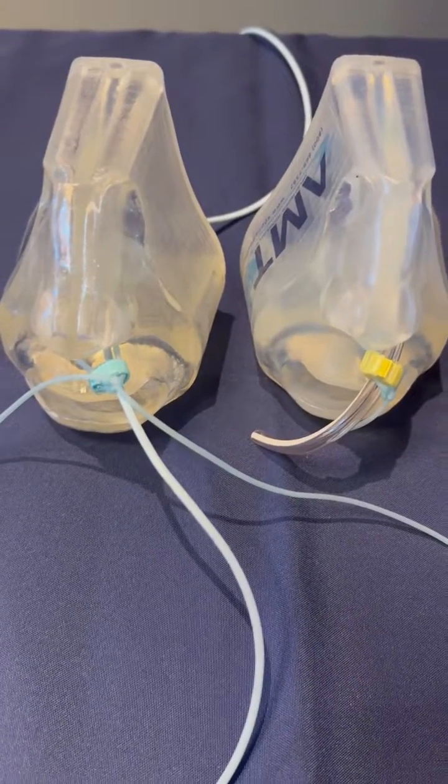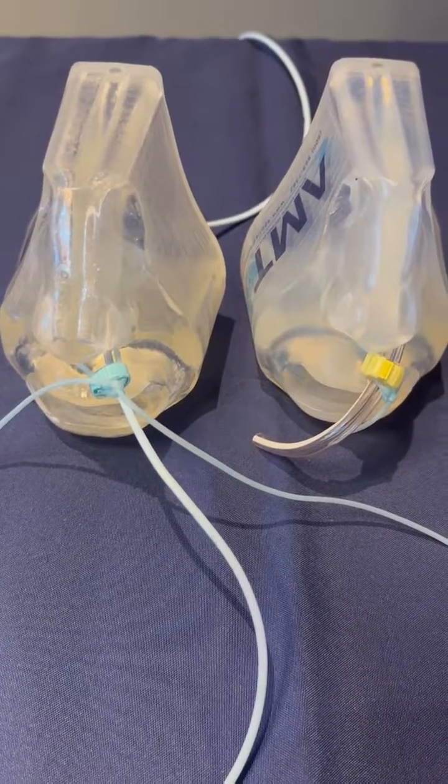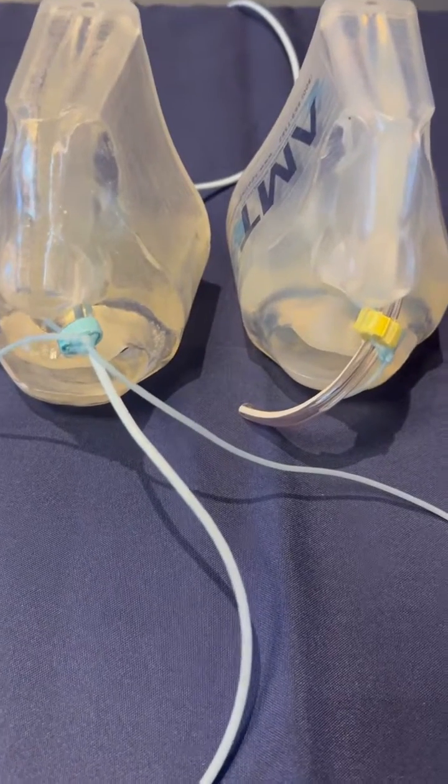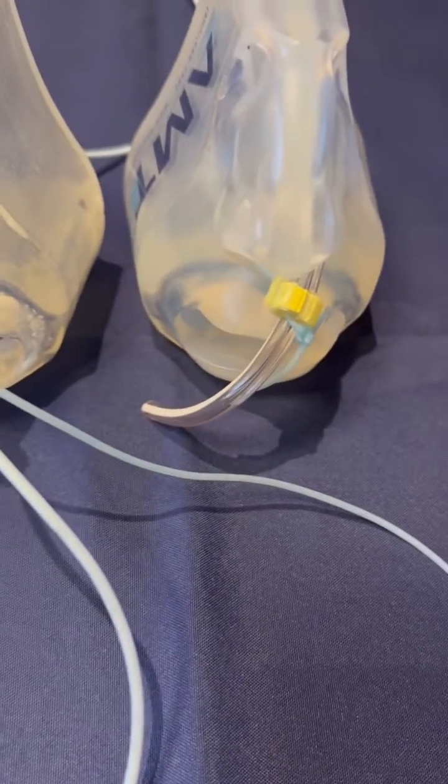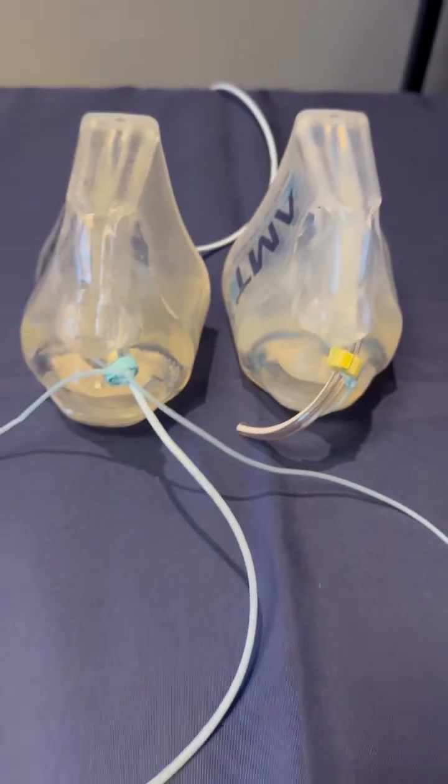Use of these fasteners have decreased tube dislodgements or tube pulls by 74%. On the left I've got a feeding tube and on the right I've got a gastric tube. I just want to show you what's out there.